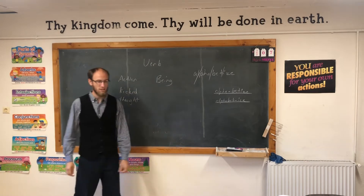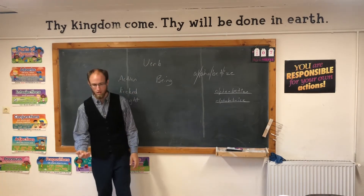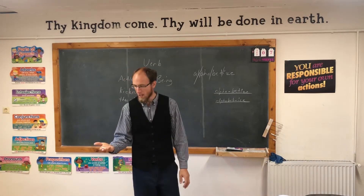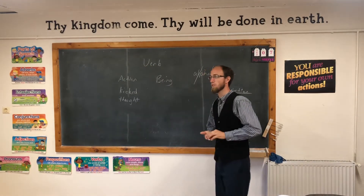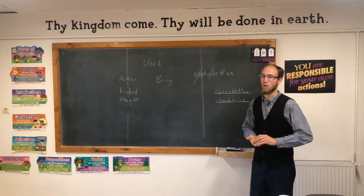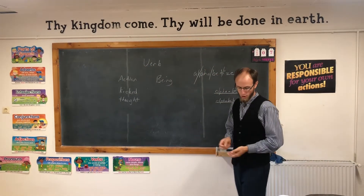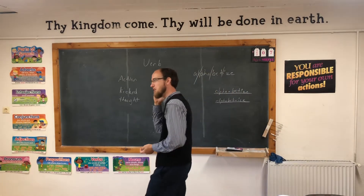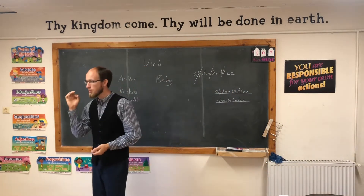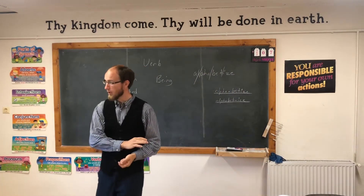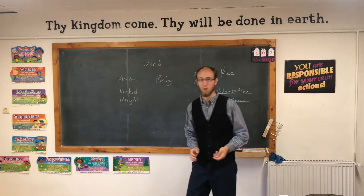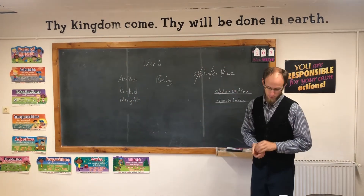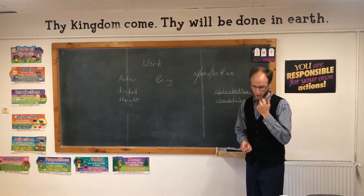And then 'being' means that something just exists. 'The chalk is in my hand.' 'I am in the front of the room.' Just plain existing. And the being verbs are — you should be able to say these just on the tip of your tongue: am, is, are, was, were, be, been, being. You should memorize what the being verbs are and be able to say them very quickly.